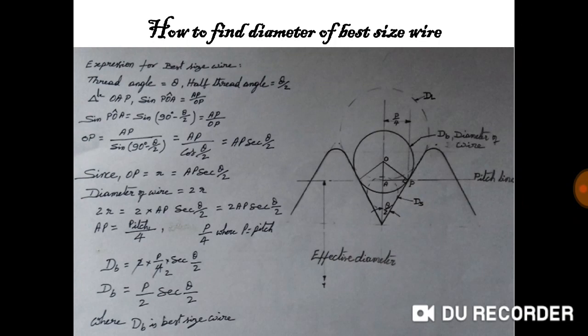How do we calculate the size of the wire? From the definition, the best wire is the one that should touch the pitch line. Hence, draw a circle in such a way that it touches the pitch line. The thread angle is theta; therefore, the half thread angle equals theta by 2.